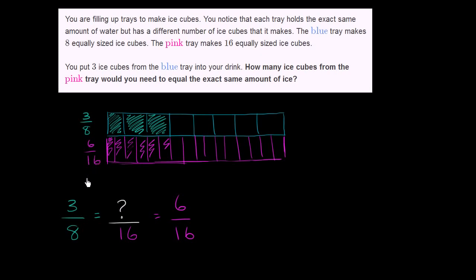Now, does that make actual sense? Well, sure. To go from three over eight to six over 16, you multiply the numerator by two and you multiply the denominator by two. Now, does that actually make sense?